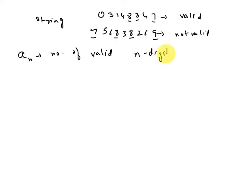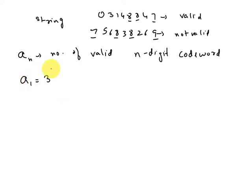Let a(n) be the number of valid n-digit code words. We need to find the recurrence relation for a(n). Now, a(1) equals 3, because there are ten digits total, and a one-digit code word is valid only when the digit is 7, 8, or 9 — a number greater than or equal to seven appearing exactly once, which is odd.